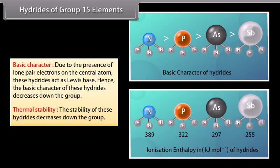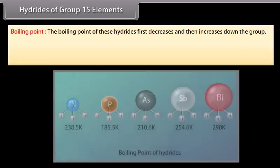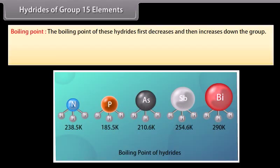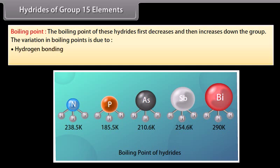The thermal stability of these hydrides decreases down the group, which can be explained in terms of their bond dissociation enthalpy, which also decreases down the group. The boiling point of these hydrides first decreases and then increases down the group, due to hydrogen bonding and van der Waals forces of attraction.